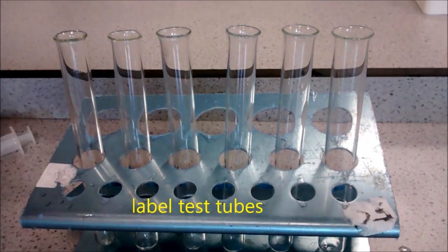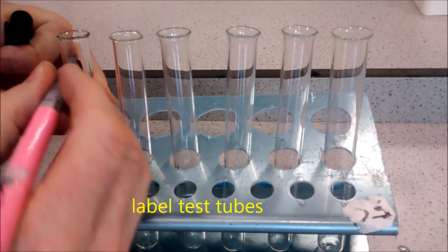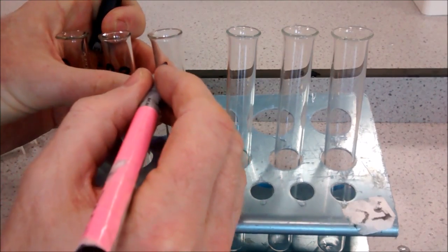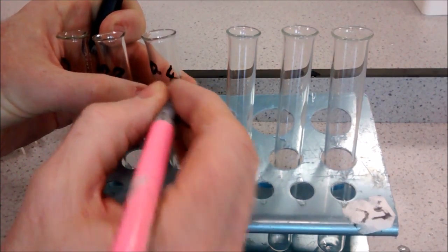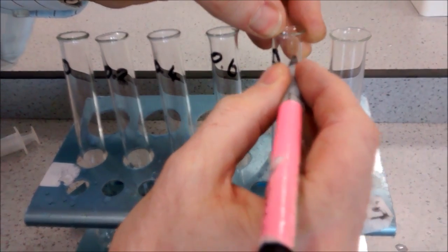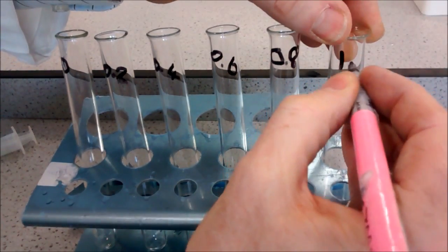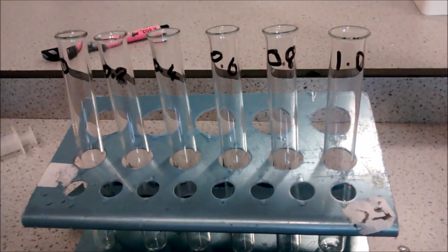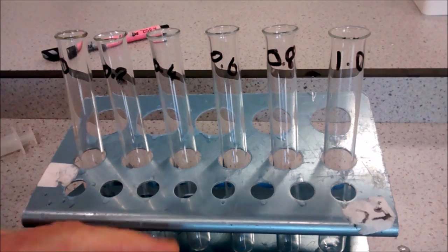Label up your test tubes from zero, 0.2, 0.4, 0.6, 0.8, and up to one molar sucrose, and then add the sucrose solutions in the right quantities.